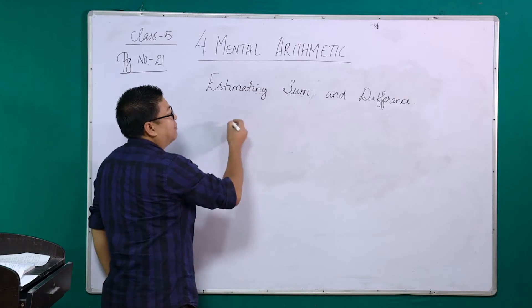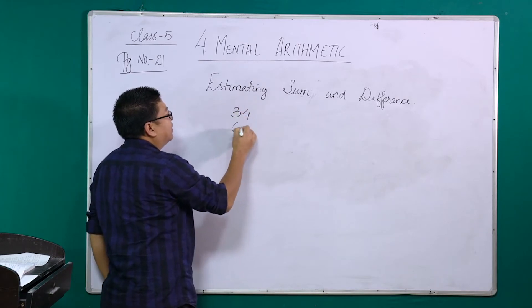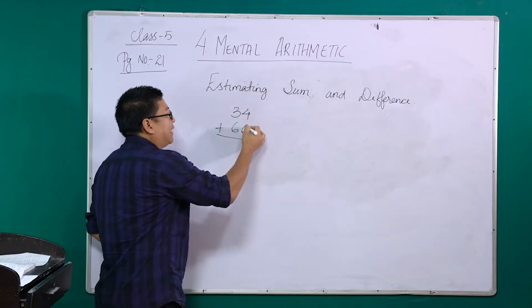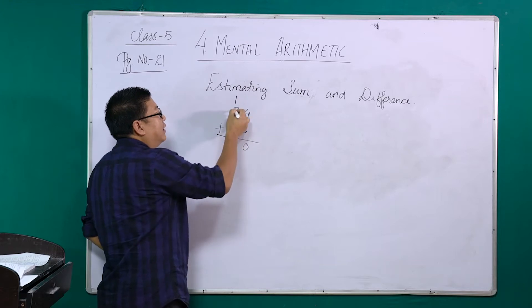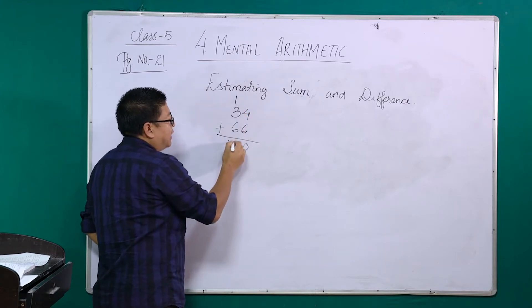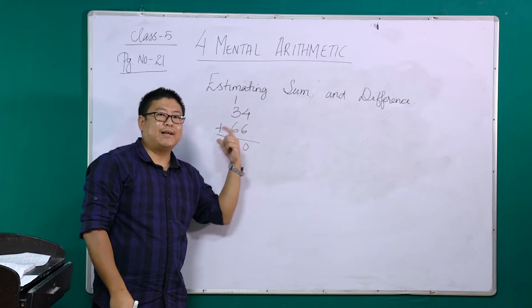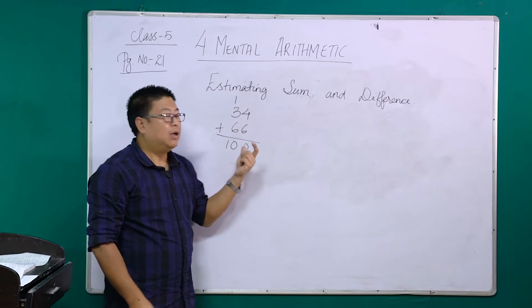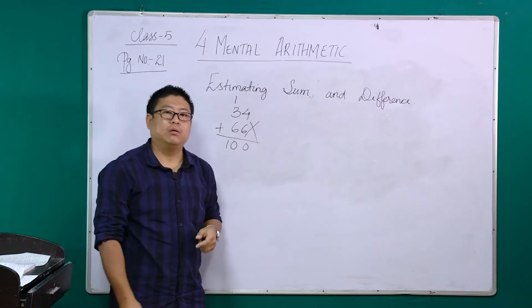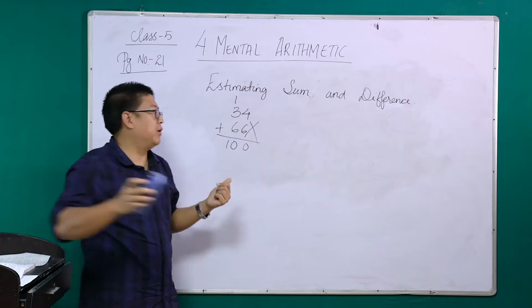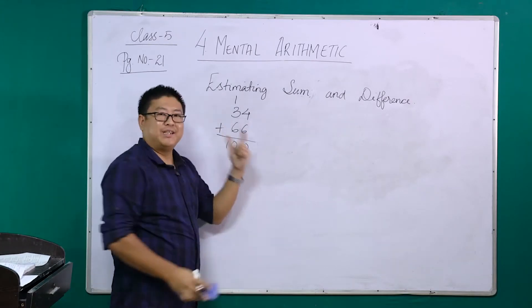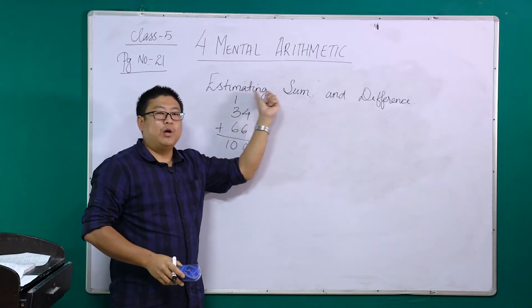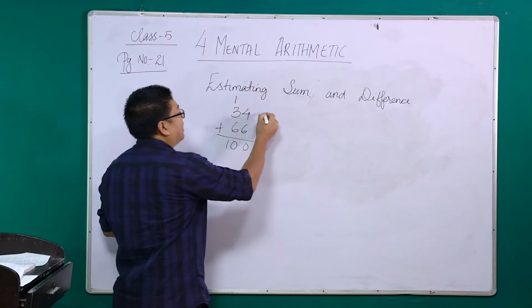Now, we know about sum. Sum means add, so we are going to add like this normally. But when it comes to estimation, normal addition is not the procedure we are looking for. When we estimate a sum, we are going to estimate in a different manner. We will be asked questions, and depending on the question, we are going to answer.